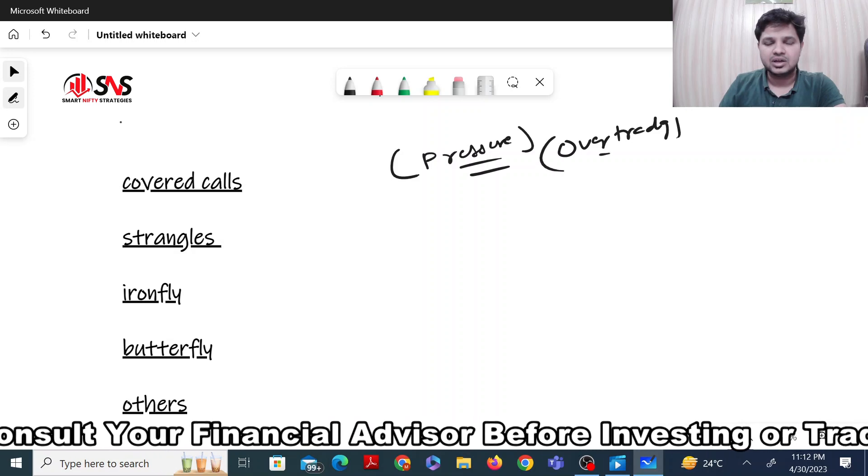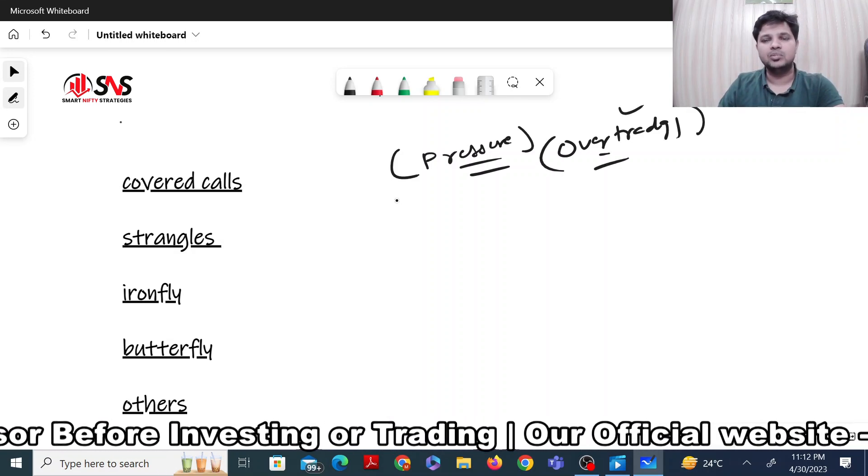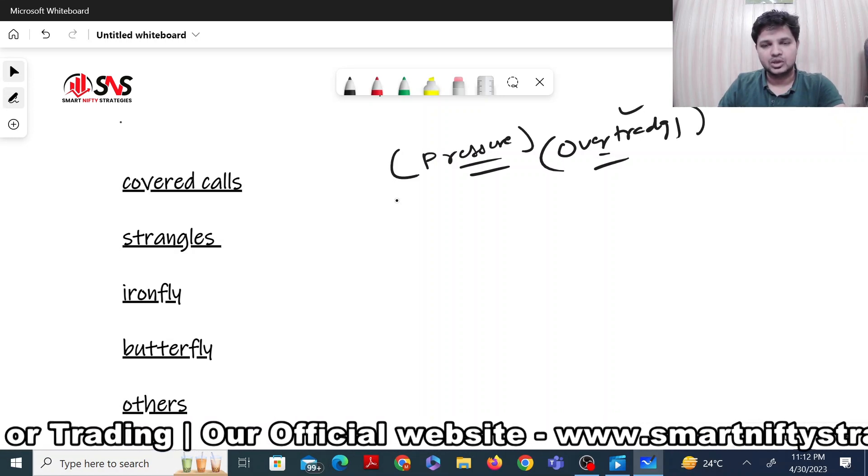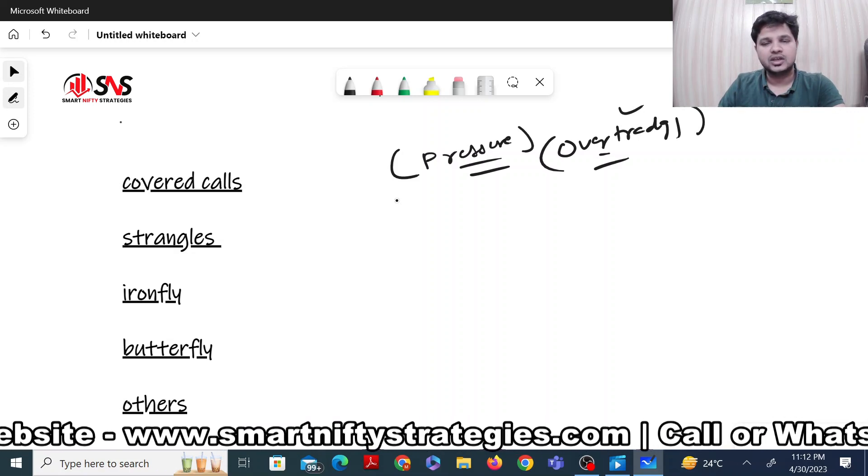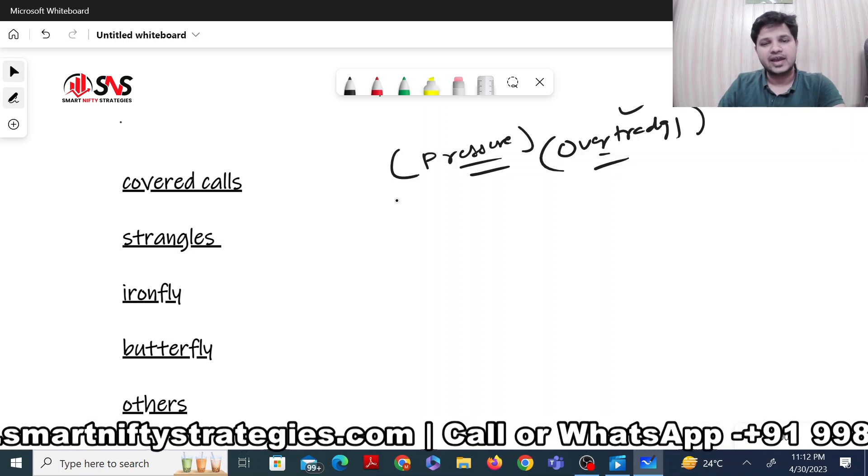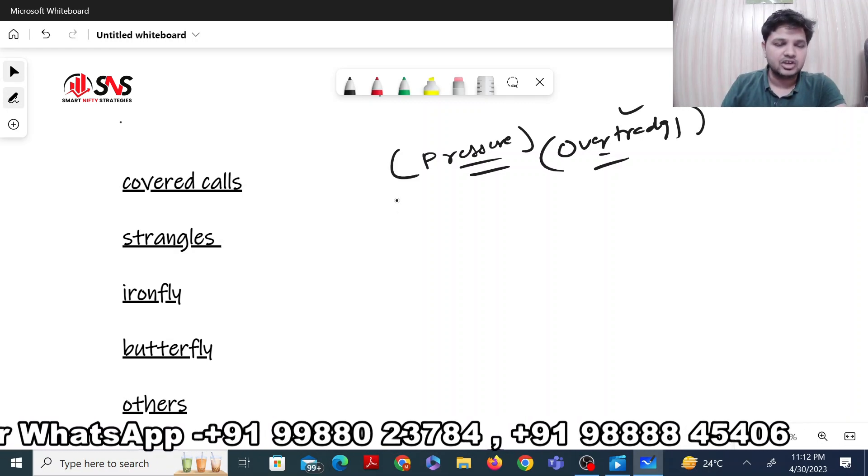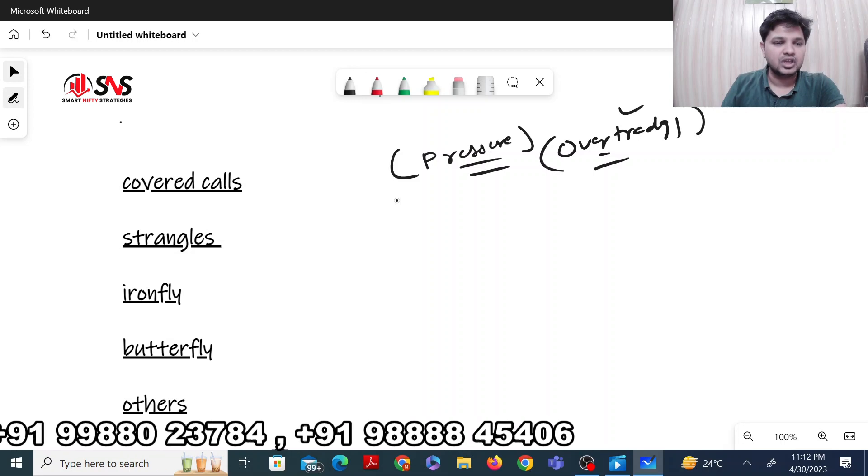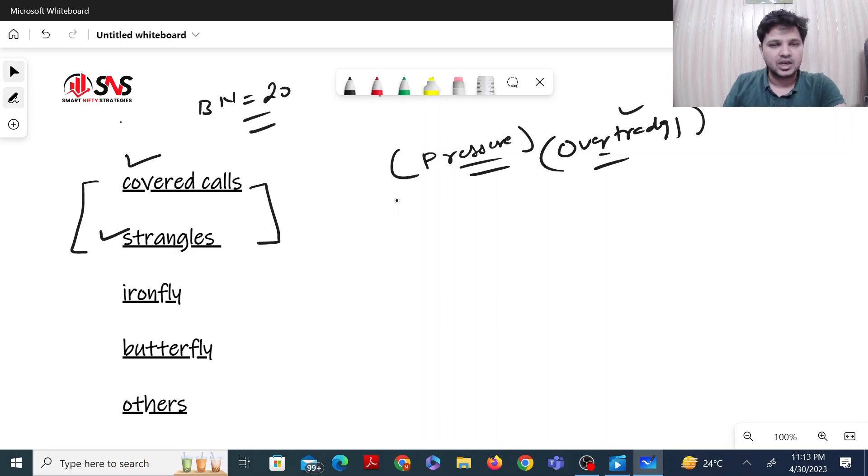Over-trading is a term you have heard many times. Now I have had time to study which strategies have helped me. The strategies that worked were covered calls and strangles. At that time, Bank Nifty lot size was approximately 20.